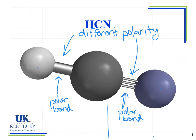So now we have two unevenly matched teams. If we're doing tug-of-war with a team on the hydrogen end and a team on the nitrogen end, with the carbon atom as the tie in the middle, somebody is going to win this game and somebody is going to lose. If somebody wins or loses, then we can say this is a polar molecule.